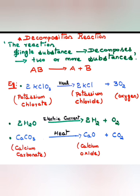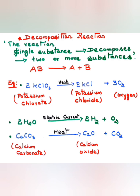Next is decomposition reaction. A reaction in which a single substance decomposes to give two or more substances is known as a decomposition reaction. A single substance AB is decomposed into A and B. Example 1: 2KClO₃ — potassium chlorate on heating gives potassium chloride and oxygen. A single substance decomposes into two substances.